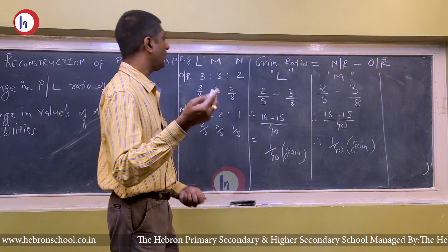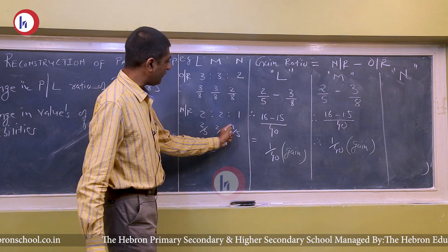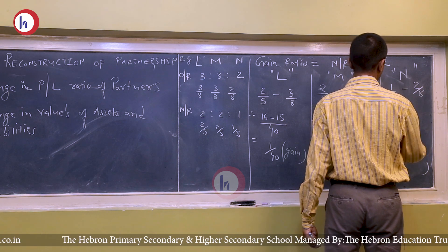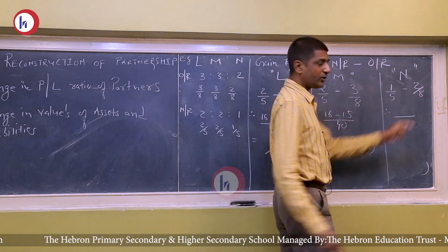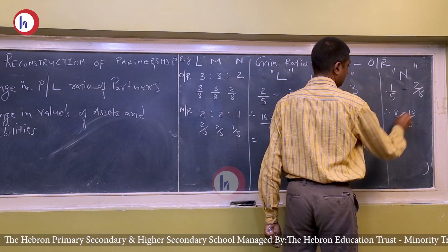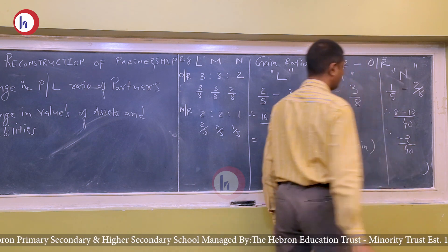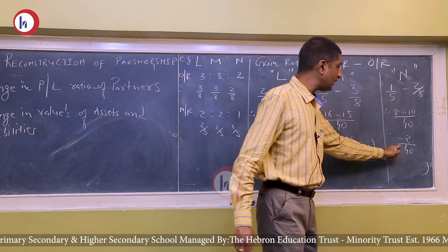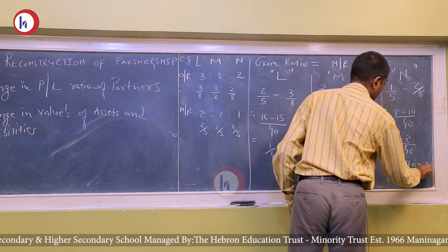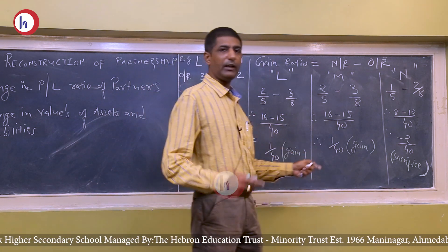For partner M: New ratio − Old ratio = 2/5 − 2/8. Multiplying denominators: (8×2 − 5×2)/40 = (16−10)/40 = 6/40... wait — (8×2 − 5×2)/40 = (16−10)/40 = 1/40 in the same situation. The answer is positive under the gain ratio formula, so it is treated as a gain for M.